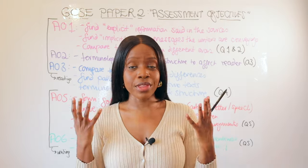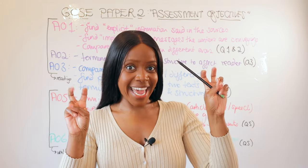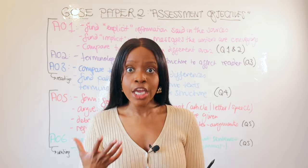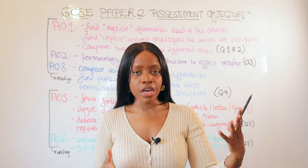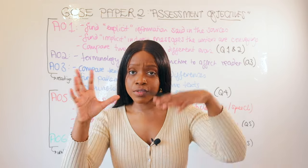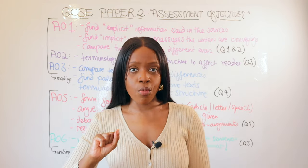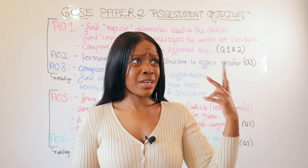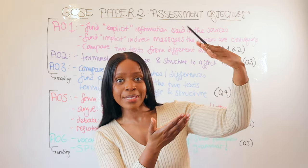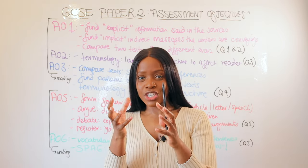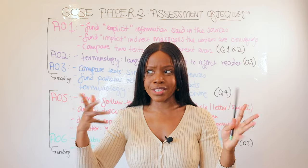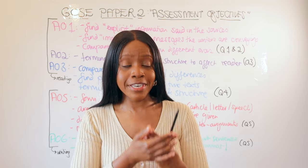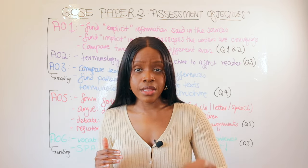Hello and welcome back to another GCSE revision video. Within this lesson I want to go over the infamous AOs in language paper 2. You might have come across assessment objectives — if you're currently in year 11, hopefully you have. You've probably done a round of mocks in year 10 and year 11 and perhaps seen your teacher's feedback saying great AO1 but very weak AO6, and it's looking like hieroglyphics. You've looked at the mark scheme and it's still mentioning words like 'select and synthesize' and you still don't understand what these AOs mean.